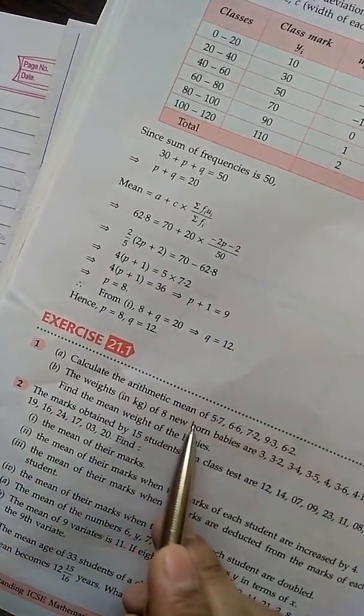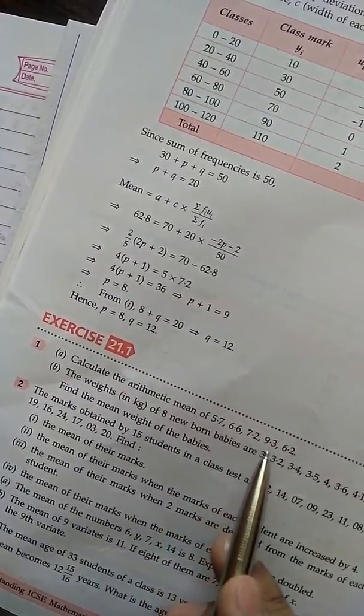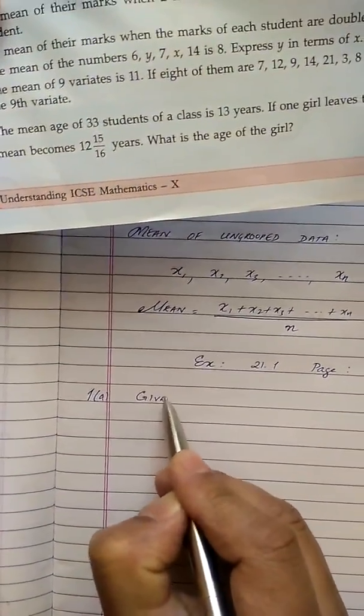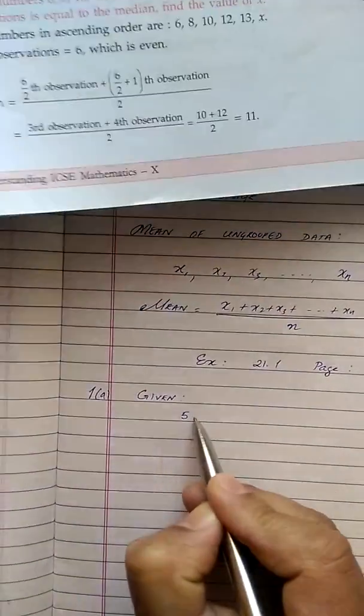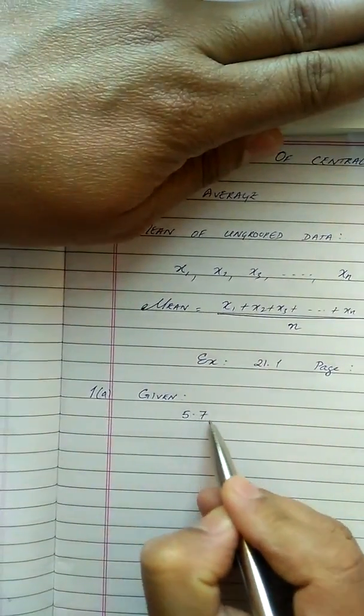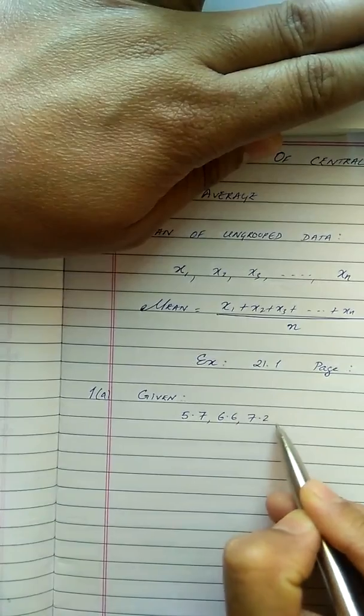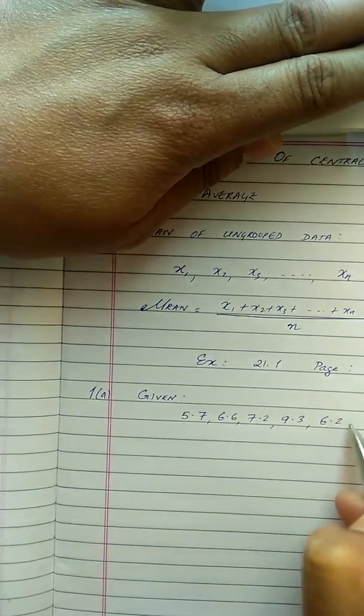Calculate the arithmetic mean of 5.7, 6.6, 7.2, 9.3 and 6.2. So first we are going to write down what is given to us. The variants given to us are 5.7, 6.6, 7.2, 9.3 and 6.2.